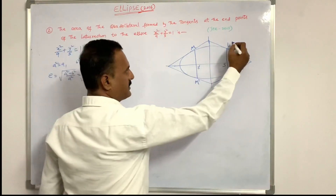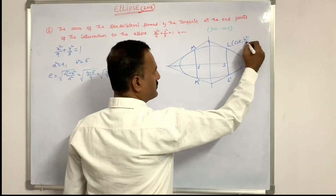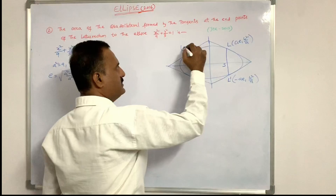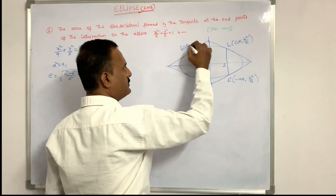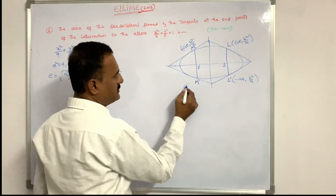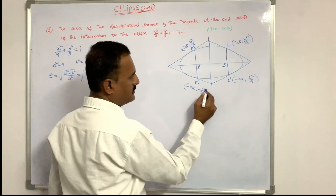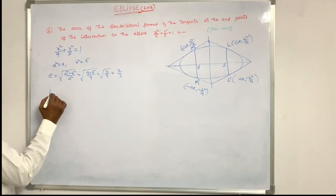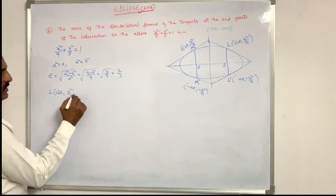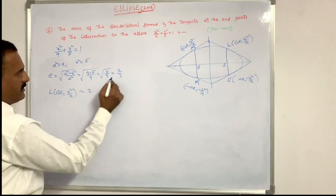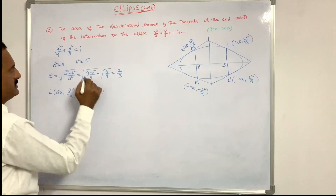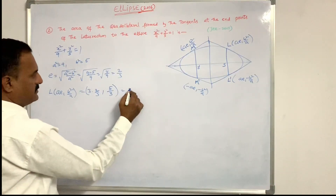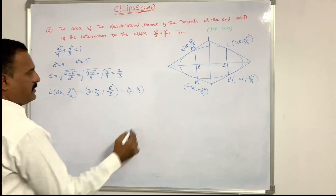Therefore the endpoints of the latus rectum are: L = (Ae, B²/A), L' = (−Ae, B²/A), M = (Ae, −B²/A), M' = (−Ae, −B²/A). Substituting A = 3 and e = 2/3: Ae = 2, and B²/A = 5/3. So L = (2, 5/3).